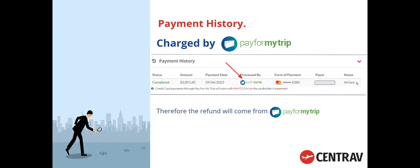It's important to look at that note because sometimes you'll see charges that are not for airfare — maybe an exchange took place, maybe there are some service fees, and you'll see those noted differently. But when we're talking about a refund, you're looking for the airfare charge. If it's charged by Pay For My Trip, the refund will come from Pay For My Trip.